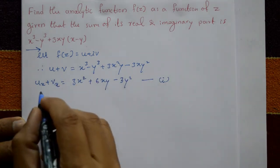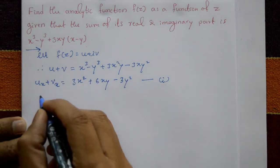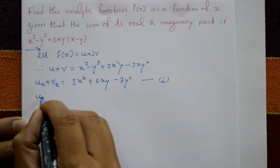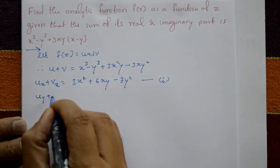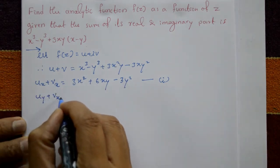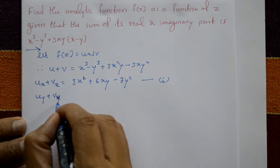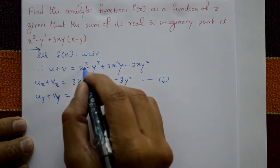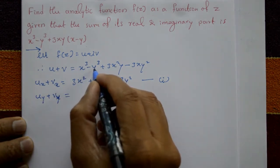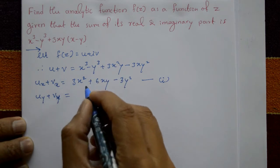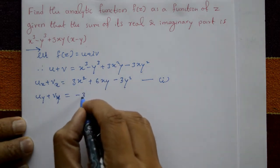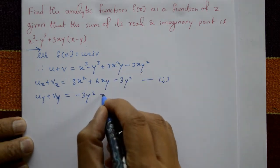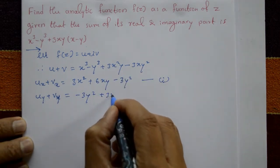Again, differentiate u + v with respect to y, treating x as a constant. So ∂u/∂y + ∂v/∂y equals -3y² + 3x² - 6xy.